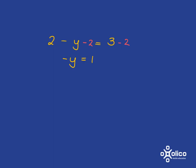Now, we haven't got y on its own, we've got negative y. But if negative y is 1, we know the very next step is to say y is equal to negative 1.